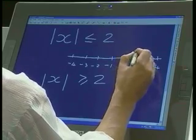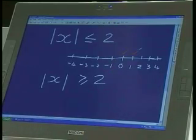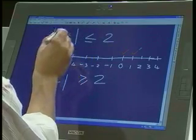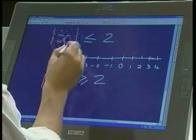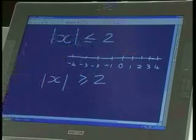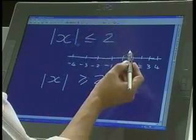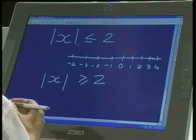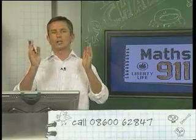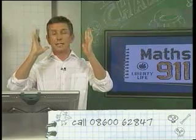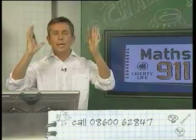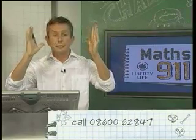It is a solution to the top inequality but it isn't a solution to the bottom inequality. Let's look at the number 1. Does the number 1 satisfy the inequality? Well if we replace the x with 1 we get the absolute value of 1 which is less than or equal to 2 which is true. So therefore this number 1 satisfies the inequality.